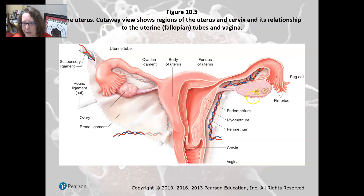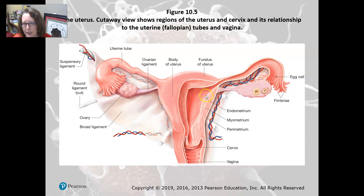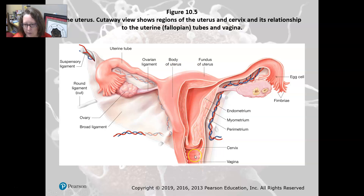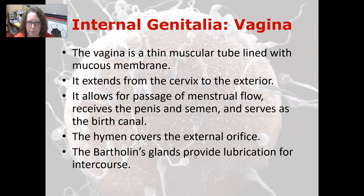Here is a full view of the female reproductive system. We have the ovaries on each side, an egg being released, the fallopian tube, and the egg traveling down to embed itself in the endometrial layer of the uterus. Here is the myometrium (the muscle layer), the perimetrium (the outer layer), the fundus, the body of the uterus, the cervix, and then the vagina.